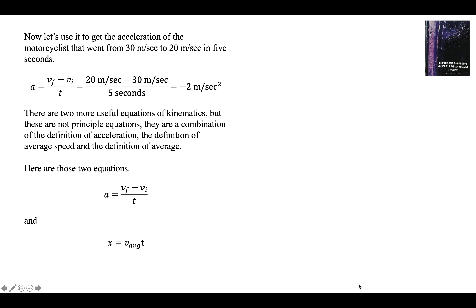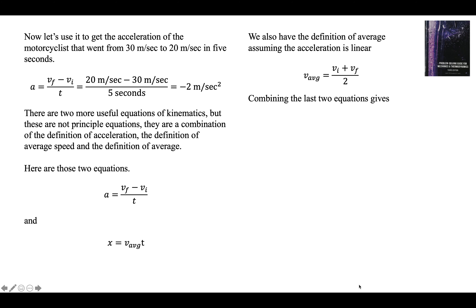There are two more useful equations of kinematics, but they are not principal equations — they're a combination of the things we already talked about. The definition of acceleration is the rate of change of speed; the definition of average speed is distance over time; and the definition of the average is V_initial plus V_final divided by 2, which is really a mathematical equation. The equation for acceleration can be rewritten as: V_final equals V_initial plus A times T. This should make perfect sense — the speed you end up at is your starting speed plus the rate of change of speed times how long you did that rate of change.